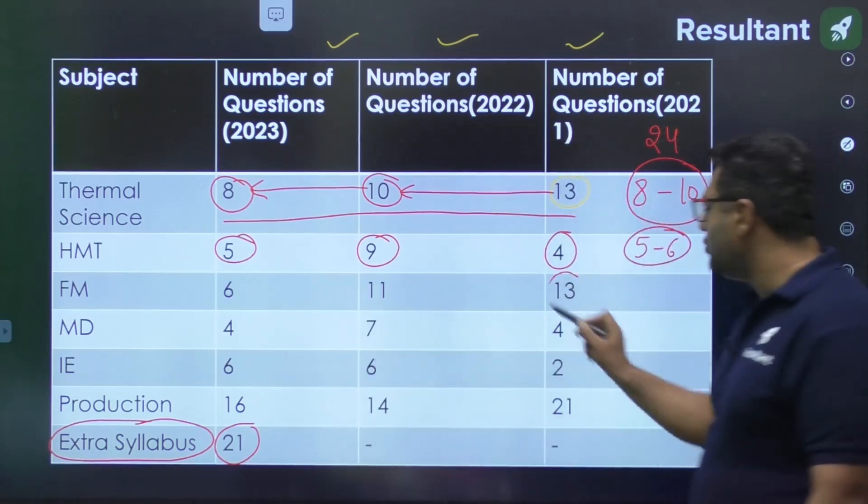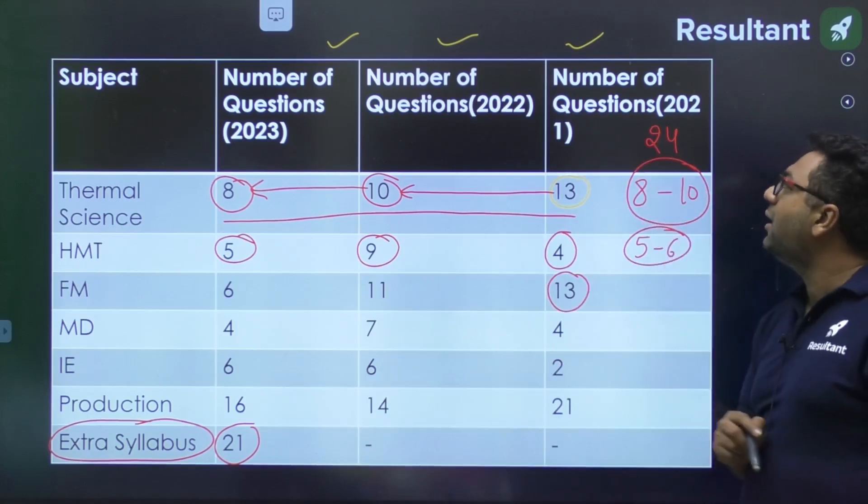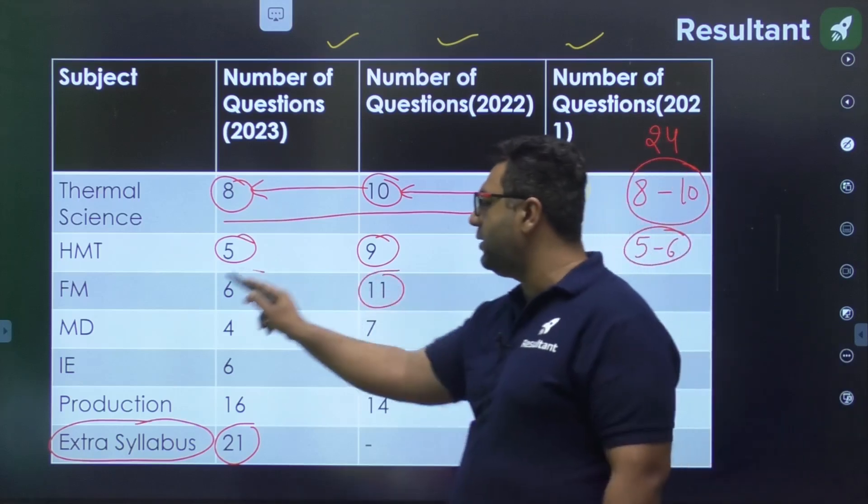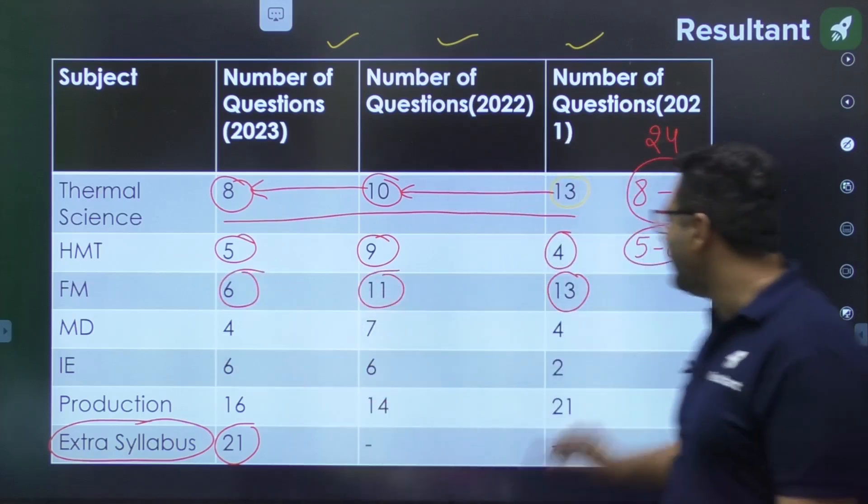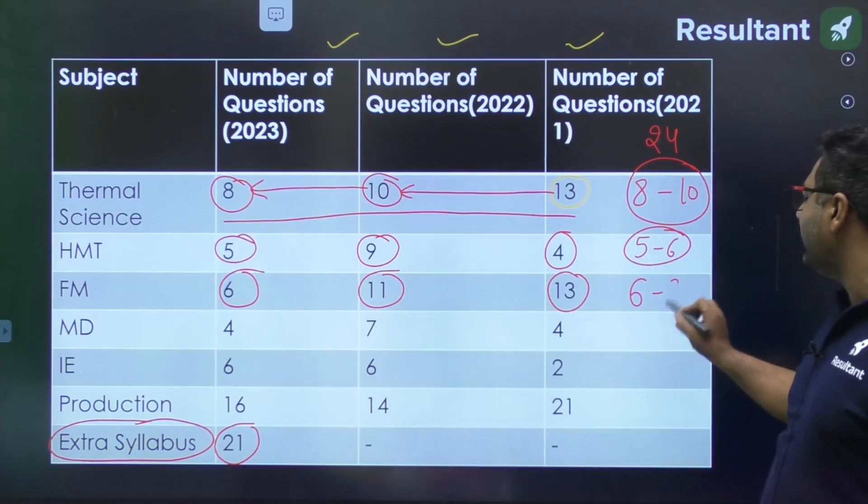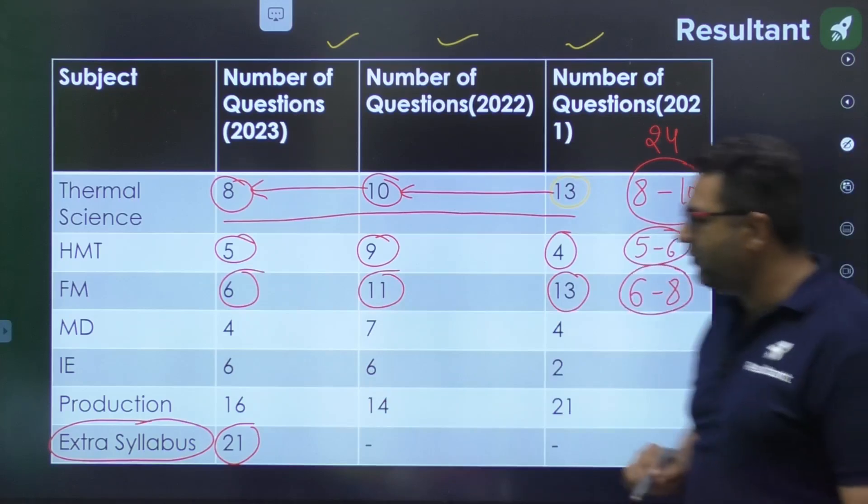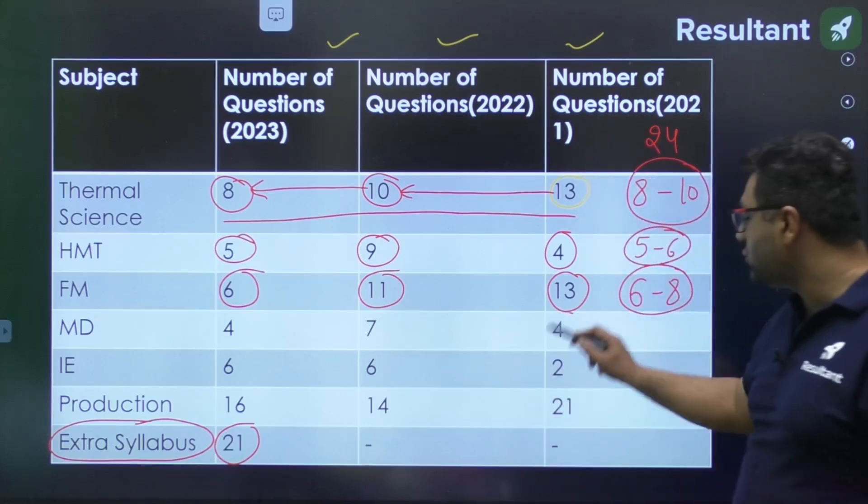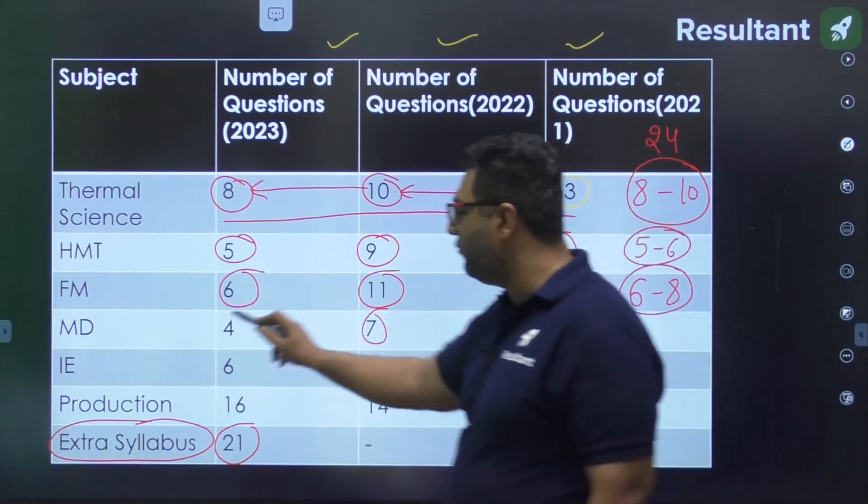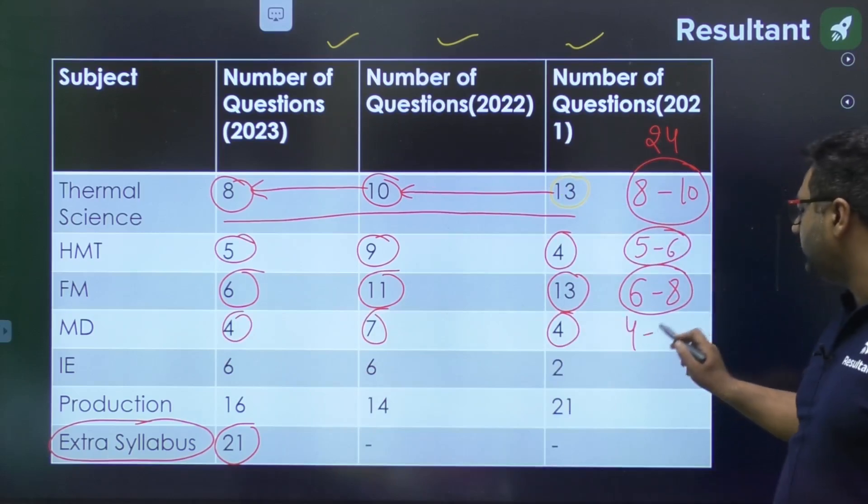For Fluid Mechanics, 13 questions in 2021, reduced to 11, then reduced to 6. You can expect somewhere around 6 to 8. For Machine Design, it was 4, then 7, then 4. You can expect 4 to 5.